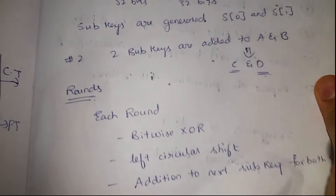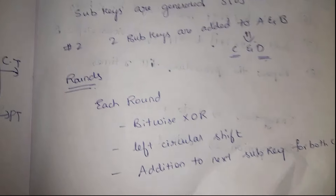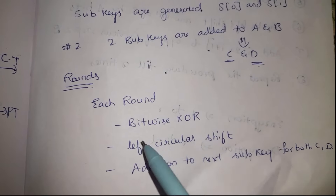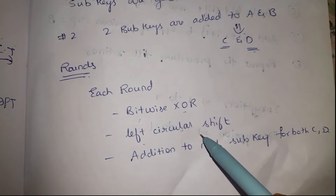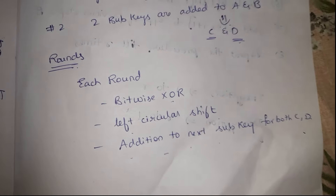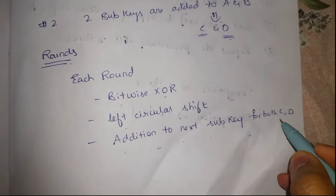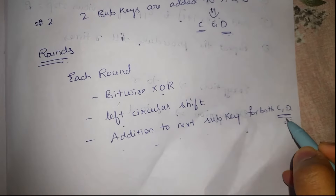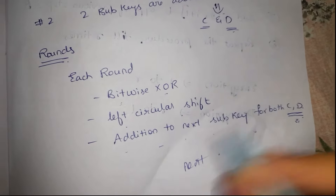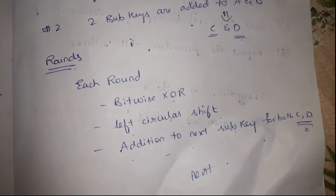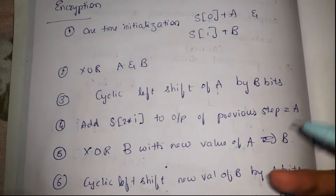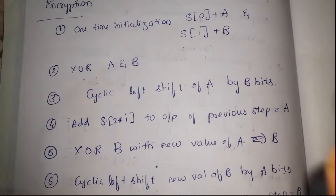The blocks c and d then undergo rounds. There are three operations performed in each round: bitwise XOR operation, left circular shift, and addition of the next sub-key. For both c and d we need new values after each round, and these new values are passed on to the next round. This process repeats until we obtain the desired ciphertext.